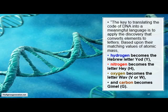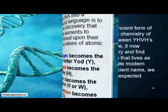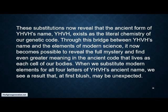The key to translating the code of DNA into a meaningful language is to apply the discovery theory that converts elements to letters based upon their matching values of atomic mass. Hydrogen becomes the Hebrew letter Yod, or the English Y. Nitrogen becomes the letter Heh, the English H. Oxygen becomes the letter Wav, V — or some people write it with W. And carbon becomes Gimel, the letter G. These substitutions now reveal that the ancient form of Yahweh's name Yod-Heh-Wav-Heh exists as a literal chemistry of our genetic code.